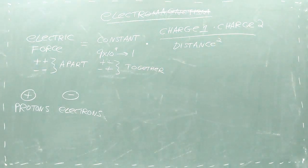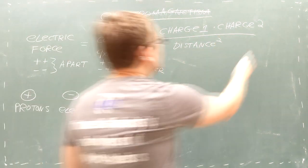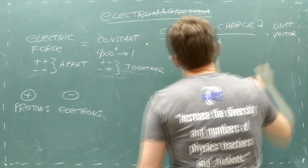Next, we divide by the square of the distance between the two objects. The next piece we need is a direction to turn this force into a vector.